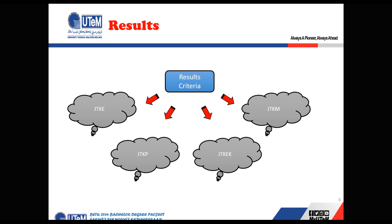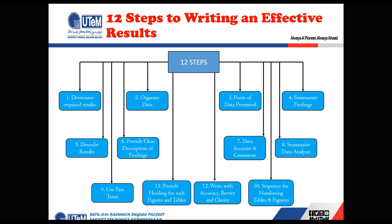Different result criteria are based on different departments, supervisors, or specific projects — we cannot generalize the criteria. But all results should follow 12 important steps that can give effective writing of the results. The first step is to determine the required results. During your experiment you will get many results, and you have to determine which are important and which are not, so the important results can be highlighted in your results and discussion section.